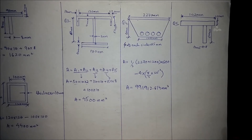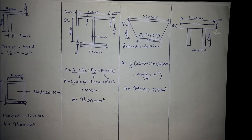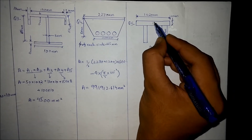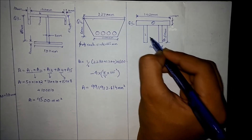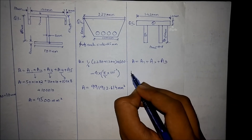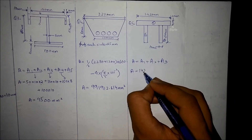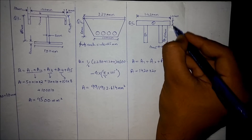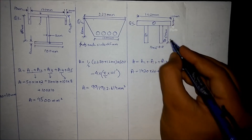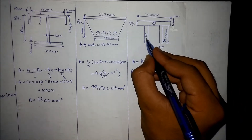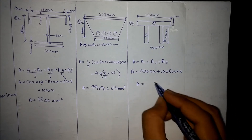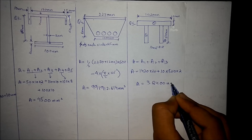For the last shape, we similarly break it into three rectangles: 1, 2, and 3. The total area equals Area 1 + Area 2 + Area 3. Area 1 is 1420mm × 20mm thickness. Area 2 has a thickness of 10mm and a height of 500mm; since there are two identical areas, we multiply by 2. The total area of this cross section comes out to be 38400 mm².